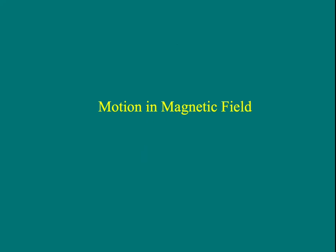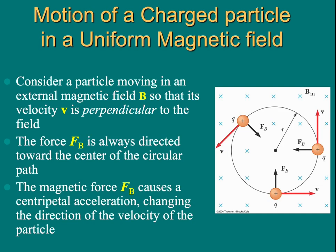We discuss motion of charged particles in magnetic field in this lecture. Consider a particle moving in an external magnetic field B, and let's assume the velocity of the particle is perpendicular to the field. So the magnetic force is always directed toward the center of a circular path.